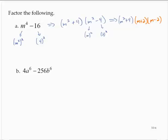4a to the sixth minus 256b to the sixth. This is a little tougher. Now, let's see. 4a to the sixth and 256b to the sixth. I think there's a common factor here. I think I can factor out the 4. So let's factor out the 4 first.